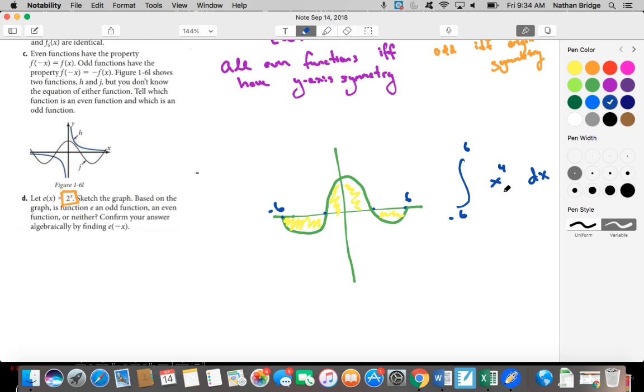But if you were to recognize at the outset that x to the fourth power is an even function and it has this y-axis symmetry, then what you would realize is that this area in the negative x region is the same as the area in the positive x region.